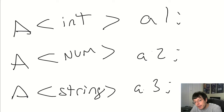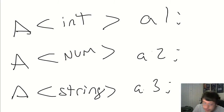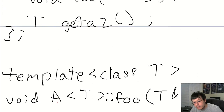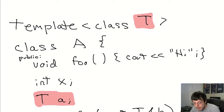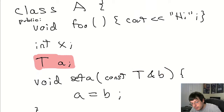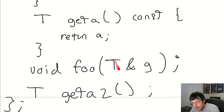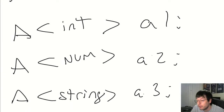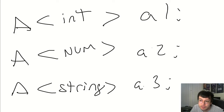The only other difference is that whereas with a function template you just call it like a normal function and don't even know a template is happening, with a class object you do — because you actually have to define what that template is going to resolve to when you declare that object, when you instantiate it. So here we're making three objects of class A. One will have the template type as integer, one as a Num class, and another as string. It's all compile-time polymorphism.